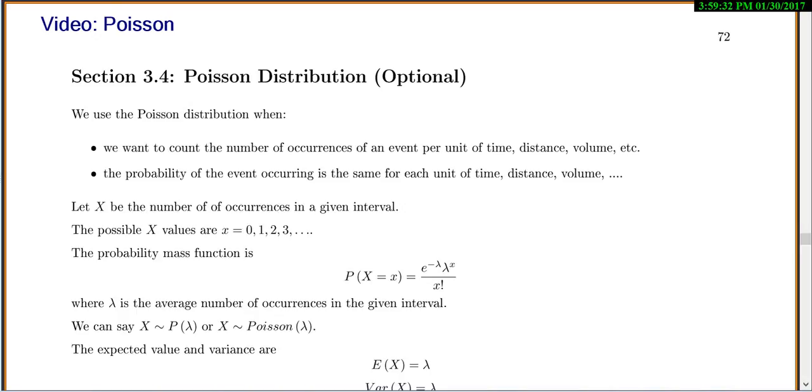This is section 3.4. We'll talk about the Poisson distribution. So we'll use the Poisson distribution when we want to count the number of occurrences of an event per unit of time, distance, volume, etc.